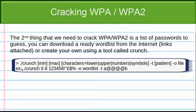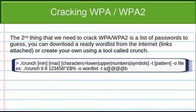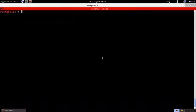In this example, we have crunch creating passwords of minimum six characters and maximum eight characters. The passwords will be combinations of the characters 1, 2, 3, 4, 5, 6 and some symbols. The output will be stored in a file called 'wordlist', and the pattern means all passwords will always start with A and end with B, with all possible combinations of the specified characters between them.